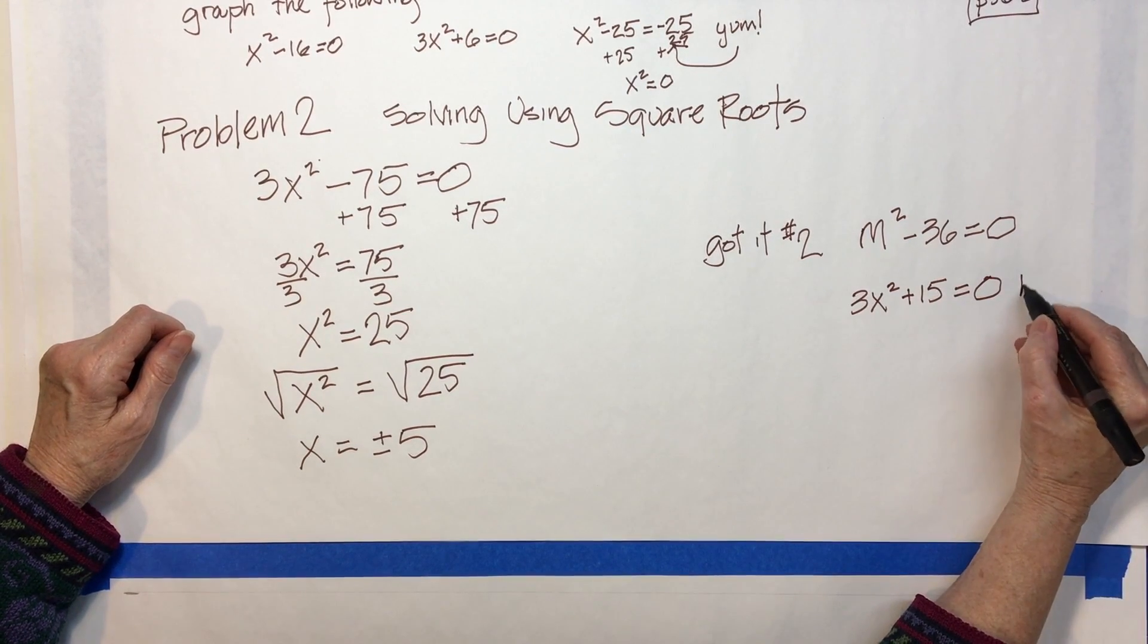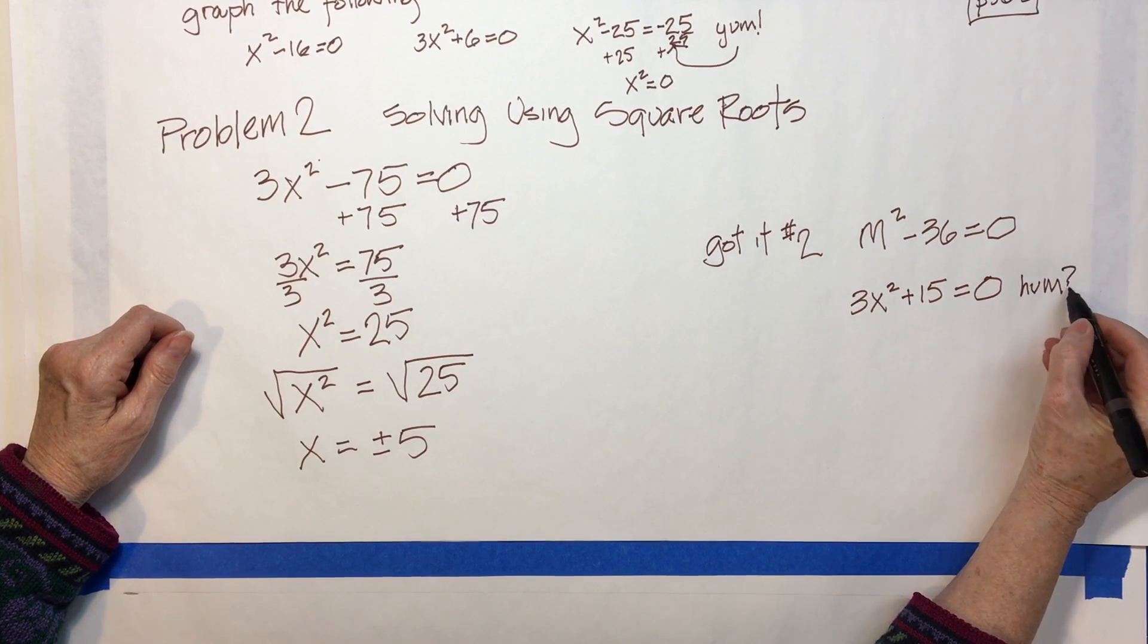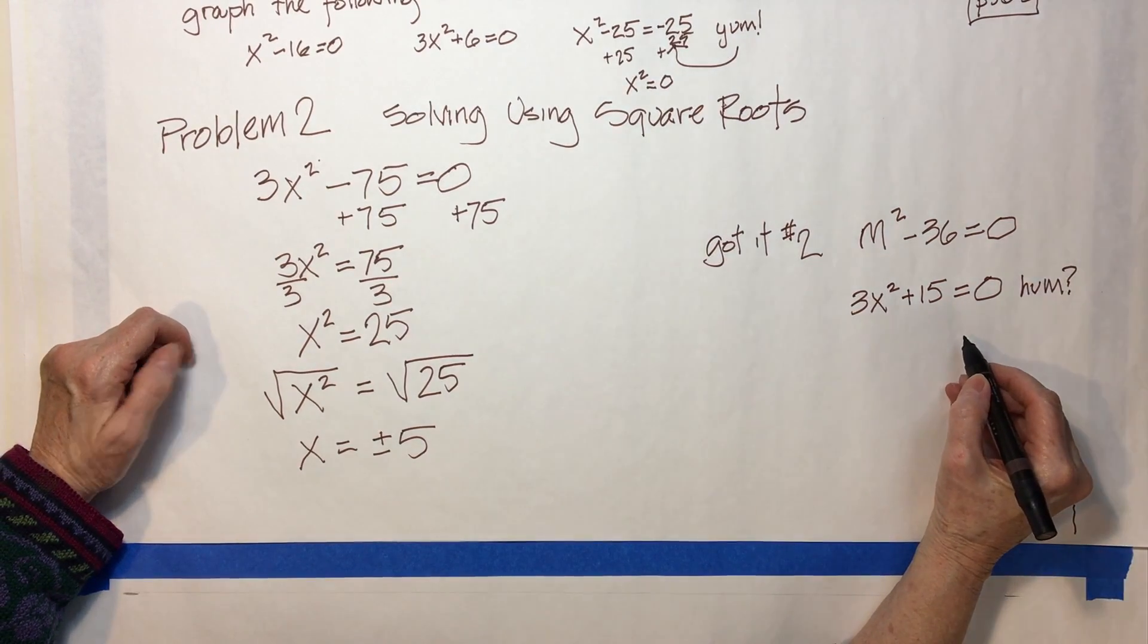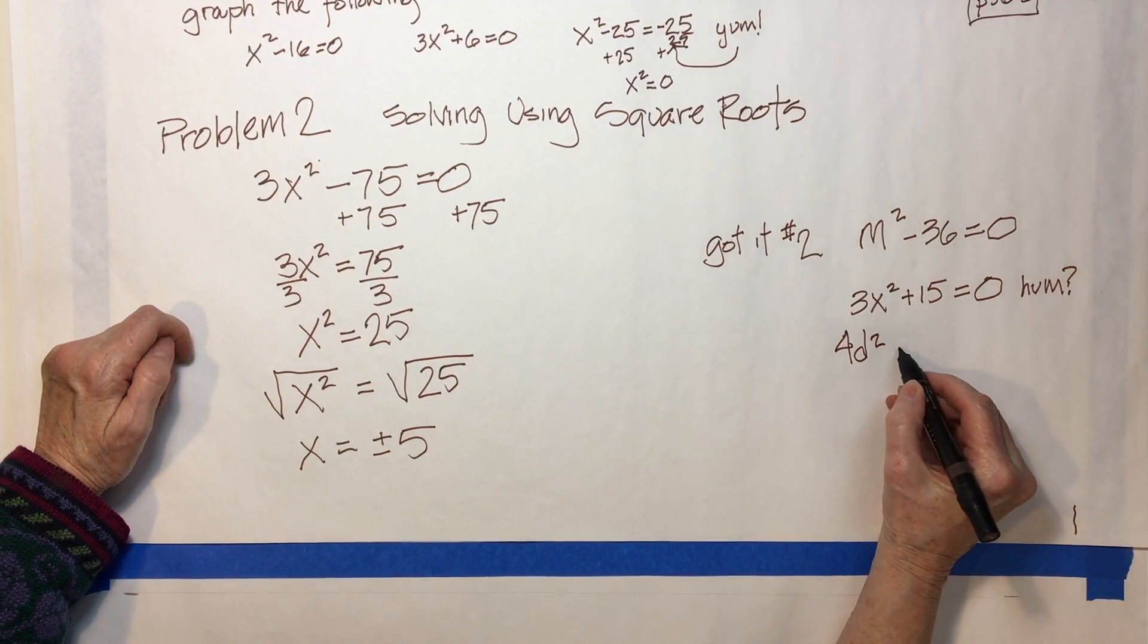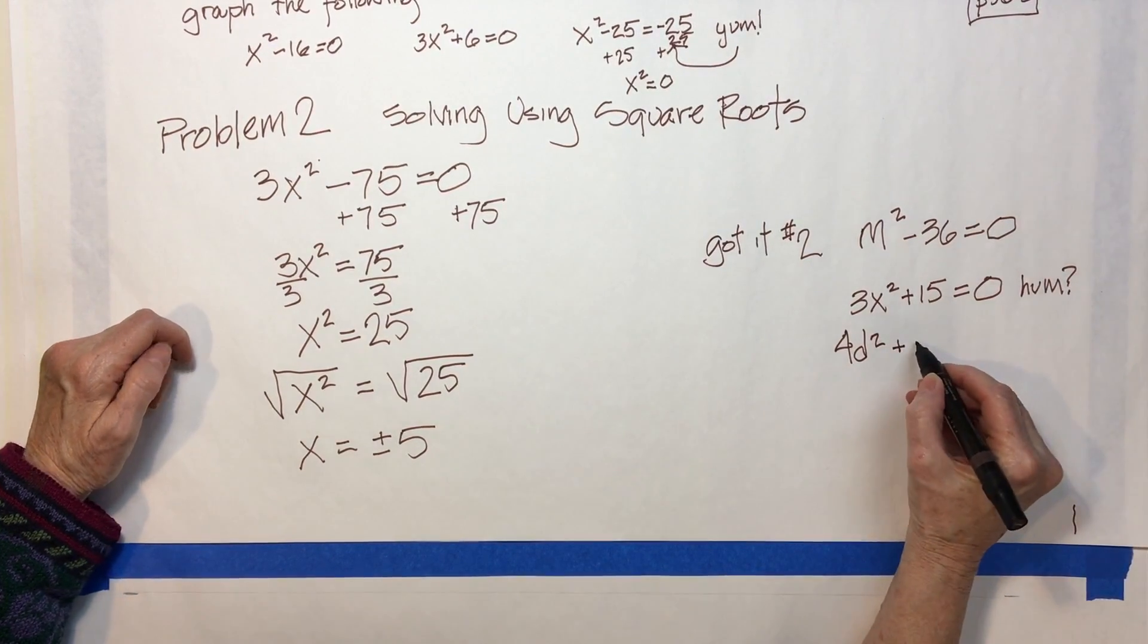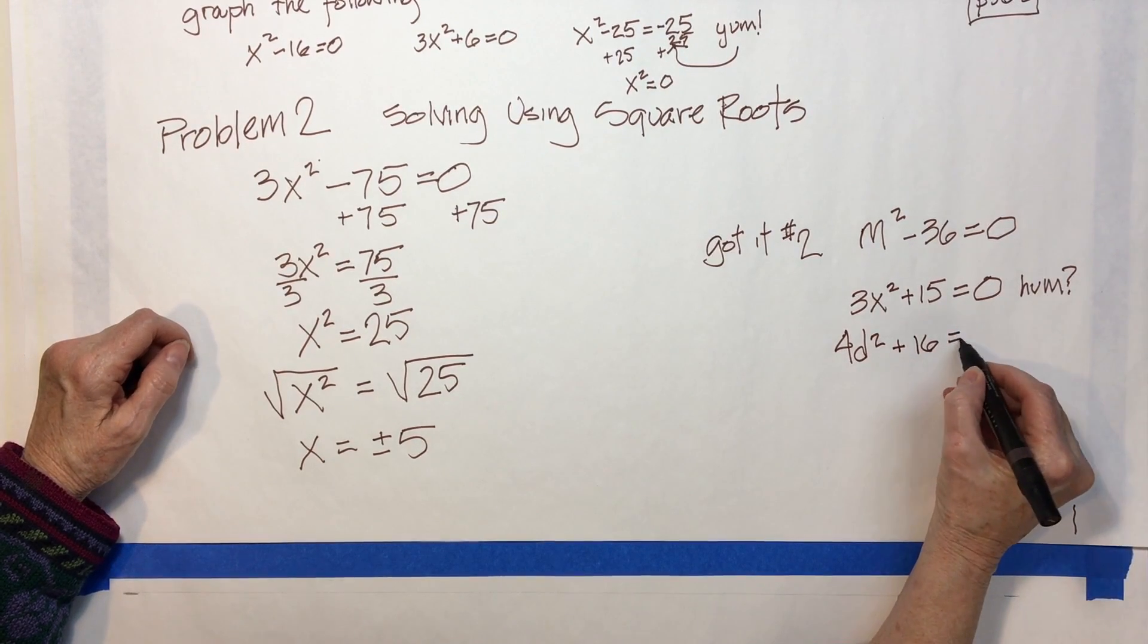And finally, 4d squared plus 16 equals 0.